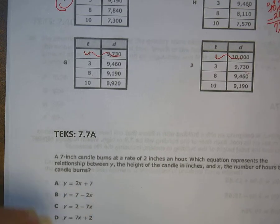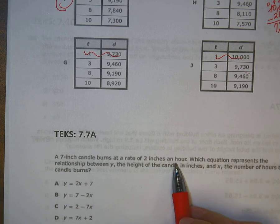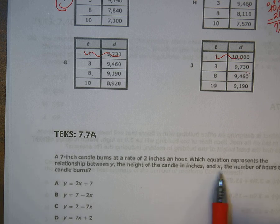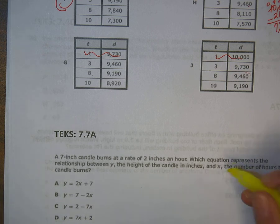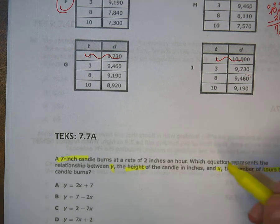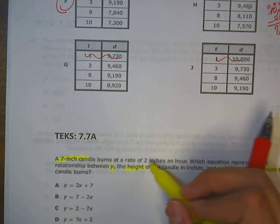On the bottom, a seven inch candle burns at a rate of two inches per hour. Which equation represents the relationship between y, the height of my candle in inches, and x, the number of hours the candle burns? So x is hours, y is the height. It's a seven inch candle and it burns at a rate of two inches per hour.